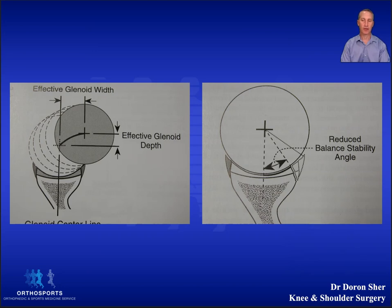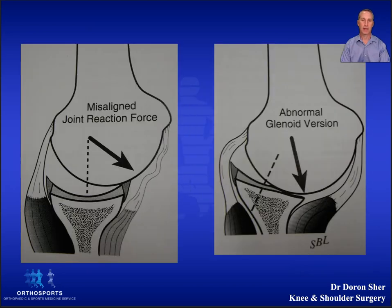Something that reduces humeral head diameter, like a Hill-Sachs injury, will also lead to instability. Even when bone is preserved it's possible for the shoulder to sublux or dislocate.